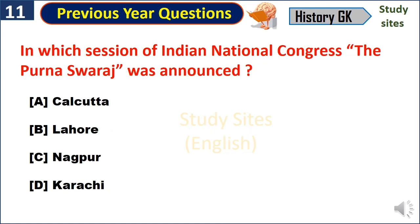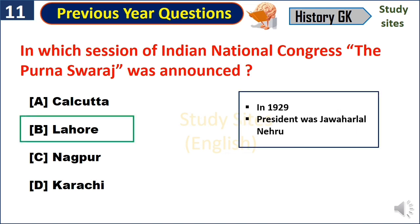In which session of the Indian National Congress was Purna Swaraj announced? Lahore, in 1929. In this session the President was Jawaharlal Nehru.